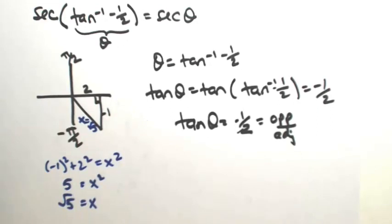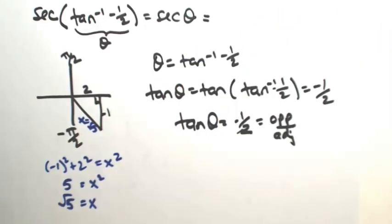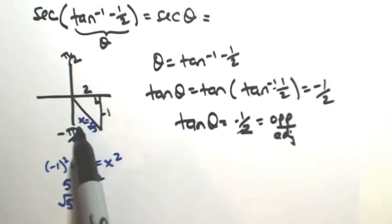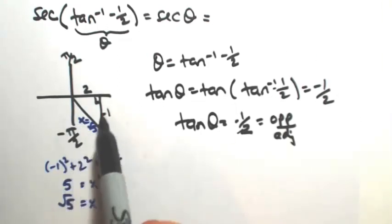So then going back to what the question is, which is the secant of theta, secant is the reciprocal of cosine. So if cosine is adjacent over hypotenuse, secant will be hypotenuse over adjacent.